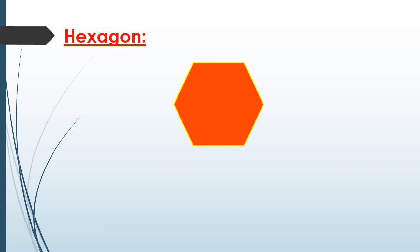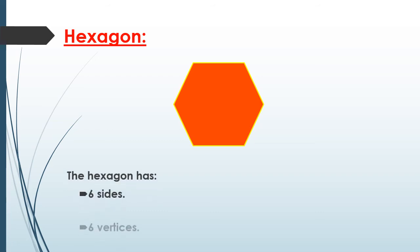The last shape is a hexagon. The hexagon has six sides and six vertices.